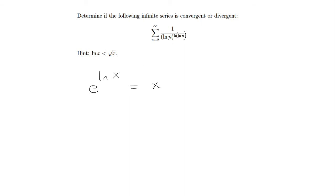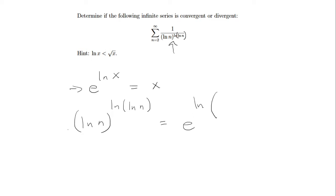If I look at ln of n raised to the ln of ln of n — basically the denominator — I'm going to use this e to the ln of x idea. So it's going to be e to the ln of ln of n, raised to the ln of ln of n.